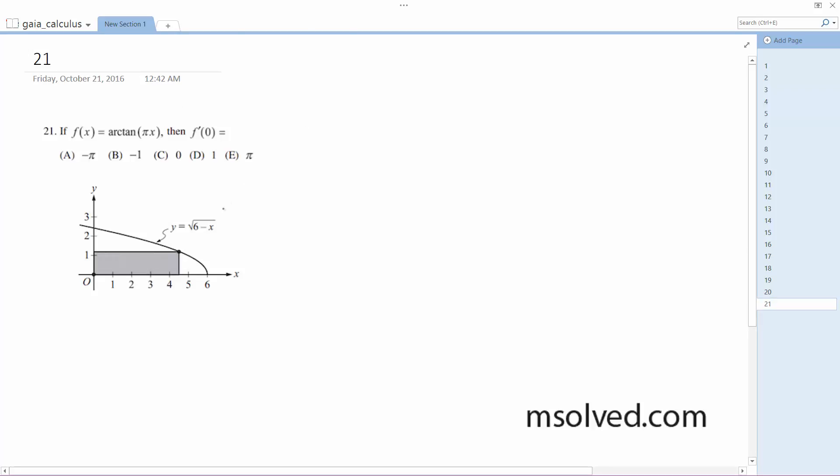So arctangent is going to be equal to 1 over 1 plus u squared type of thing here. So on what's inside, this is going to just be the derivative is equal to 1 over 1 plus quantity pi x squared.